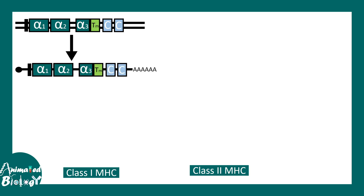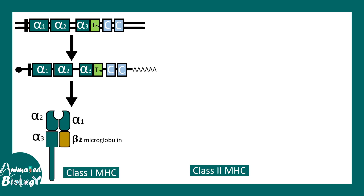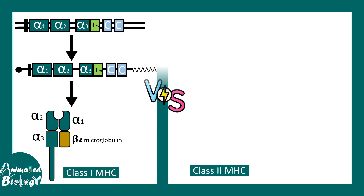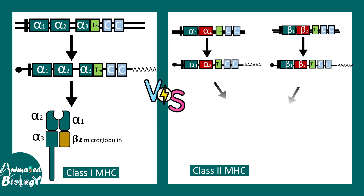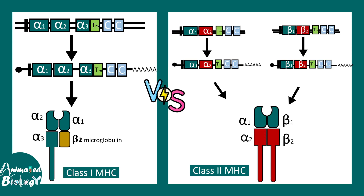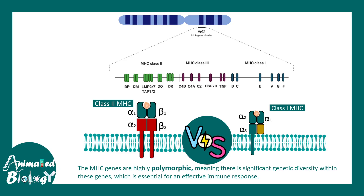These chains are actually encoded by specific genes. Class 1 MHC genes encode the Class 1 MHC mRNA that ultimately gives rise to its domain-wise structure. Note that beta-2 microglobulin is not expressed by the MHC genes. In contrast, Class 2 MHC is encoded by two different genes — one for alpha chains and one for beta chains.